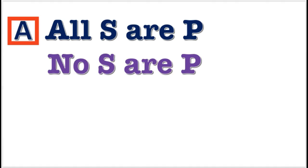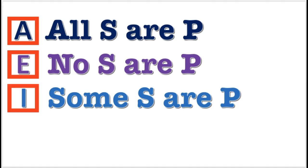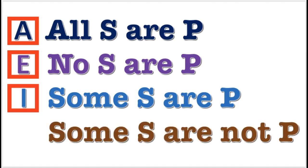For example, all S are P is called an A proposition. And no S are P is called an E proposition. Some S are P is called an I proposition. And some S are not P is called an O proposition.